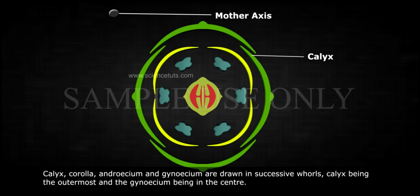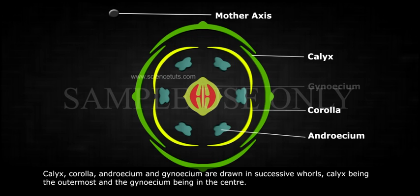Calyx, corolla, androecium, and gynoecium are drawn in successive whorls...